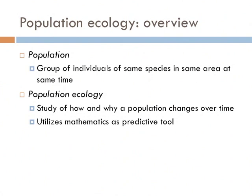The ecological definition of a population is a group of individuals of the same species in the same area at the same time, and population ecology studies how and why a population changes over time. Very commonly, population ecologists use mathematics as a predictive tool.